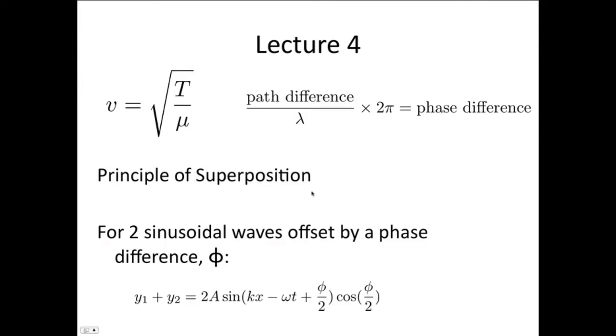We saw the principle of superposition that said that we could just add the amplitudes of the two waves at any point in space to get the resultant wave. And as an example, we showed that for two sinusoidal waves offset by a phase difference φ, we get y₁ + y₂ equals 2A sin(kx - ωt + φ/2) cos(φ/2). So don't memorize this, but make sure that you are aware how to derive things similar to this.